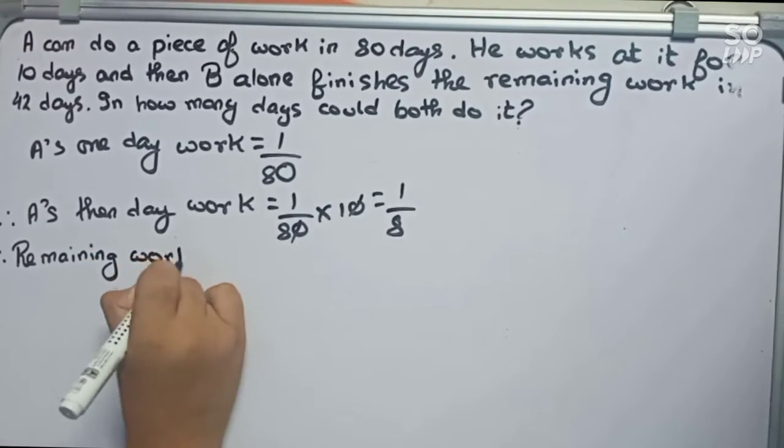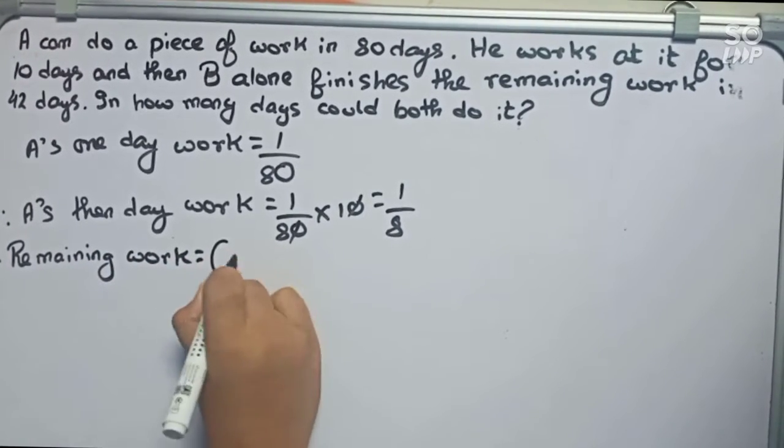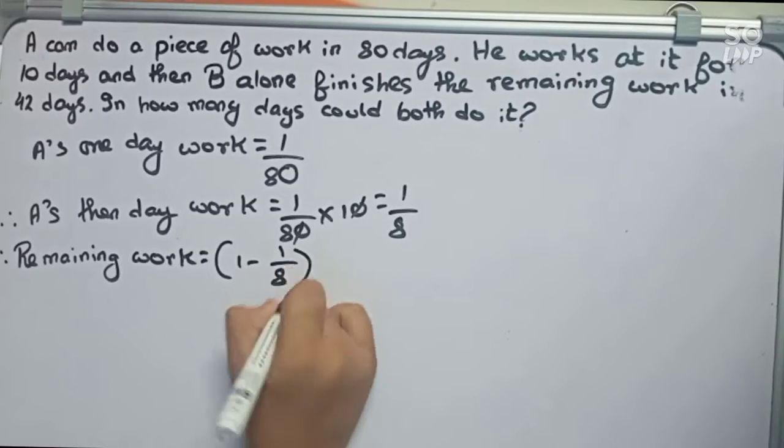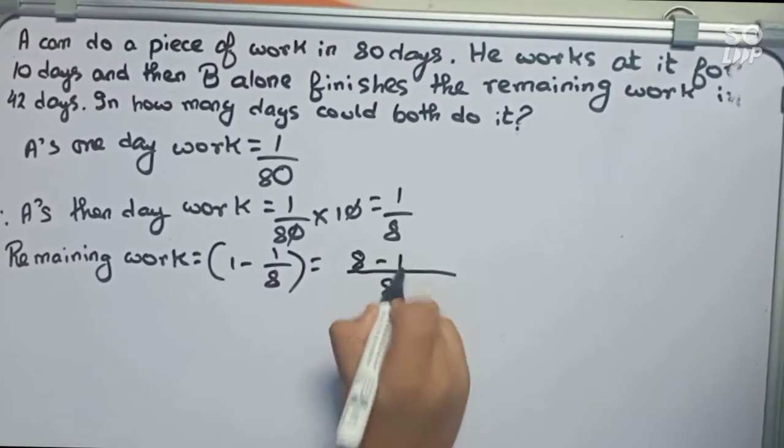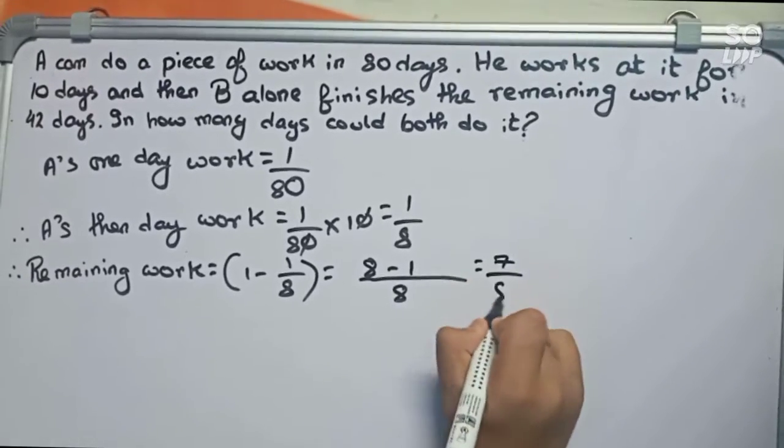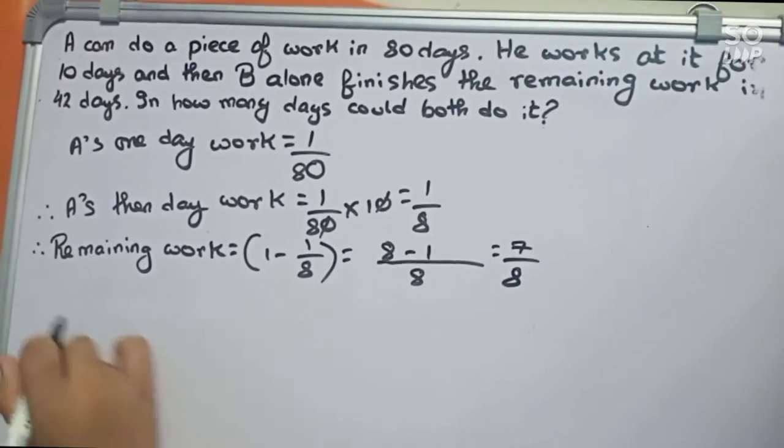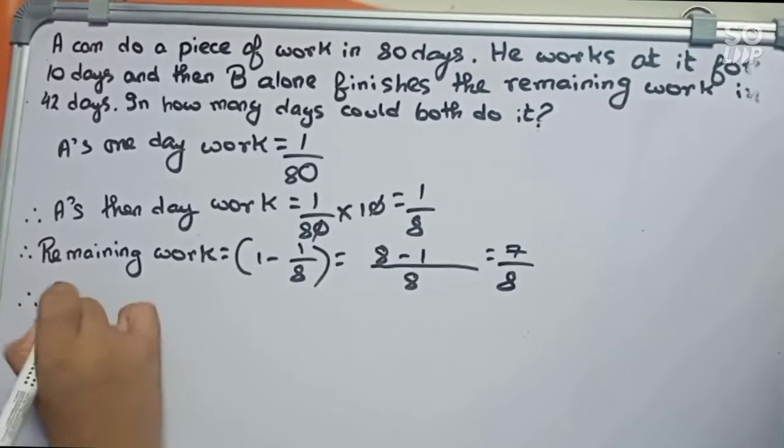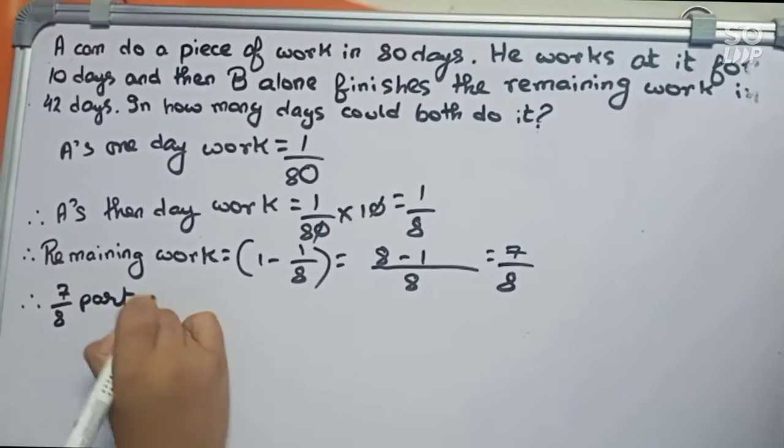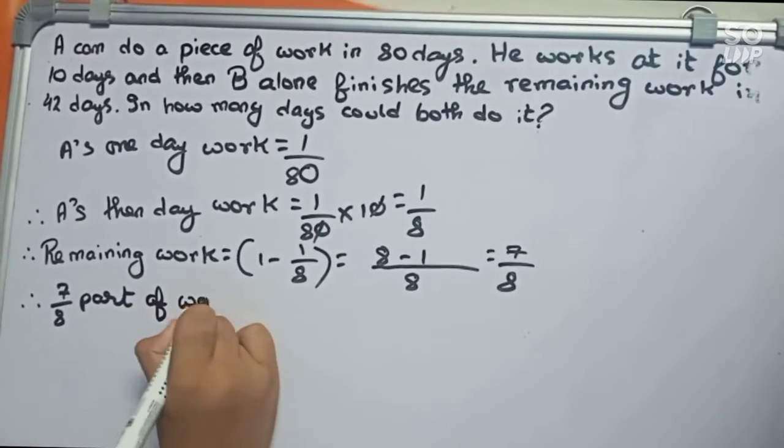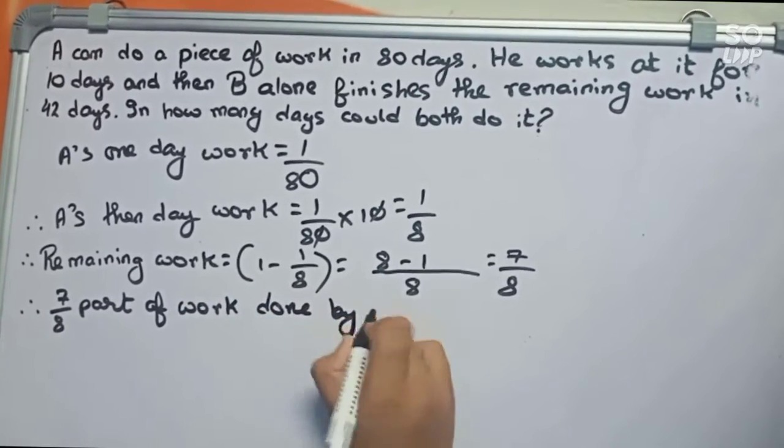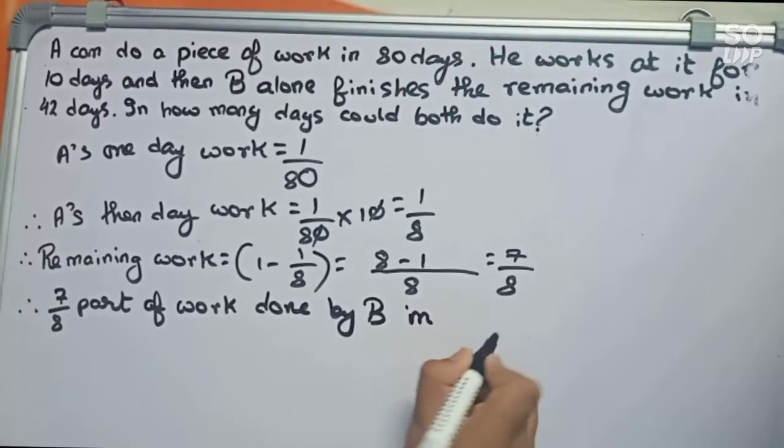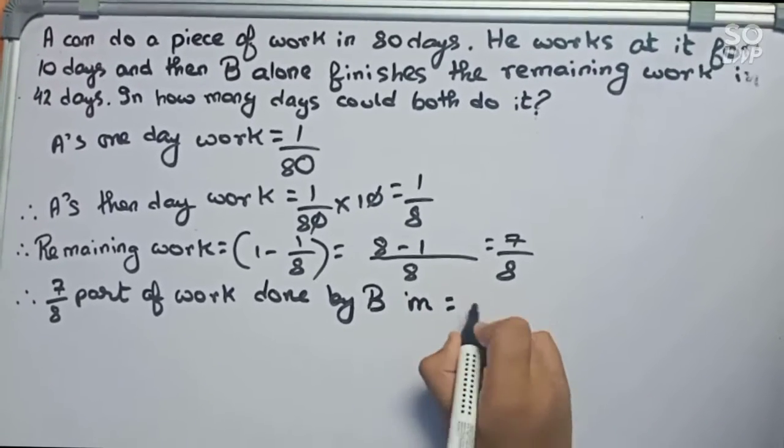Remaining work = 1 - 1/8 = (8-1)/8 = 7/8. Now this work is done by B, therefore 7/8 part of work done by B in 42 days.